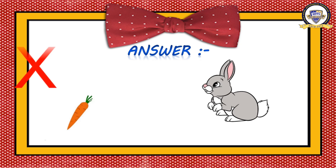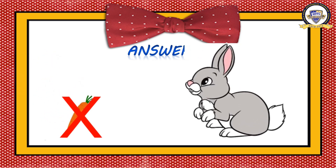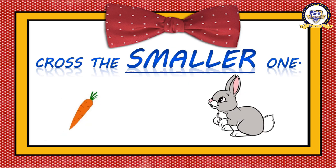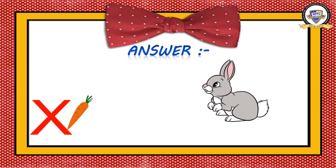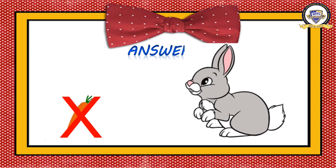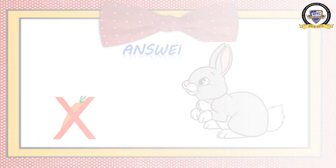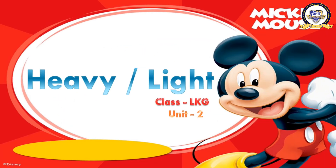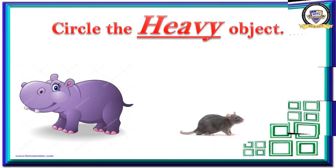Shall we move to the next topic? Are you ready? The next topic is on the screen — can you read it? It is heavy or light. Heavy means things which have weight. Light means things which do not have that much weight — they have less weight. Now we will mark the heavier and lighter objects. Ready for the questions?